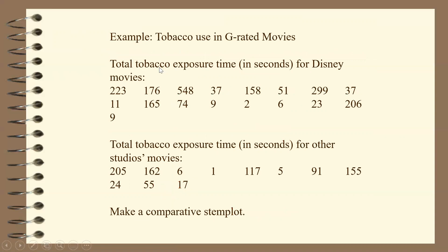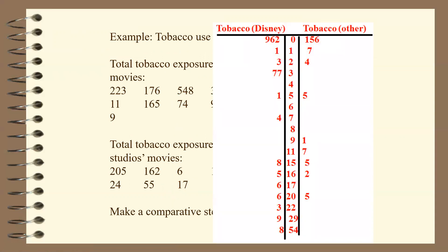Another example: tobacco use in G-rated movies versus tobacco use in Disney movies — a comparative stem plot. We give each side a title and build the stem based on the range of numbers, which here spans one-digit all the way to three-digit numbers. The stems go 0 through 9, then skip to 11 since there are no data points with a stem of 10 — it is okay to skip a stem as long as you have no data point there. To read the left side for Disney, always start with the stem: those values represent 2, 6, 9, 11, and 23.